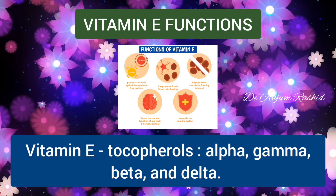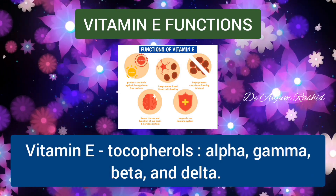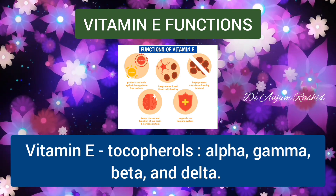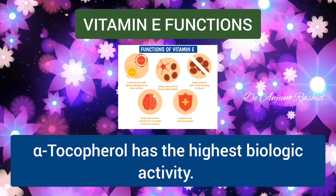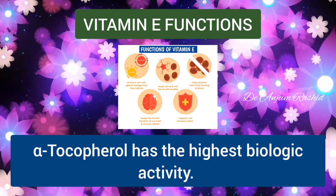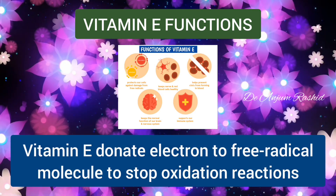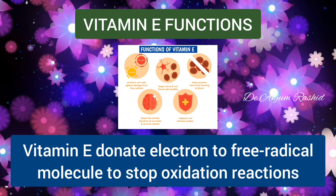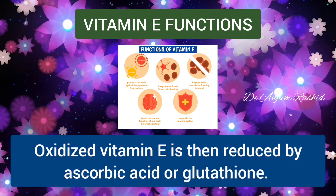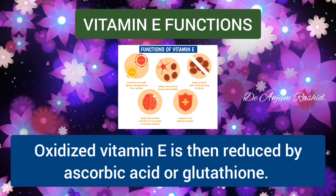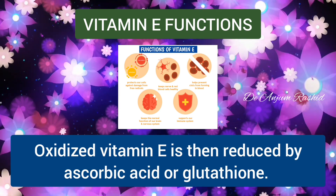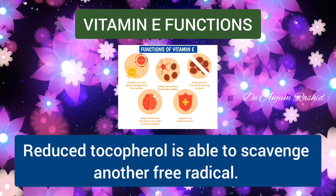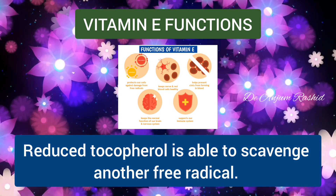Vitamin E is a family of compounds called tocopherols. There are four major forms: alpha, gamma, beta, and delta. Alpha-tocopherol has the highest biologic activity. Vitamin E can donate an electron to a free radical molecule to stop oxidation reactions, and this oxidized Vitamin E is then reduced by ascorbic acid (Vitamin C) or glutathione, allowing the reduced tocopherol to remove another free radical.